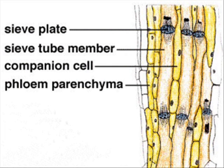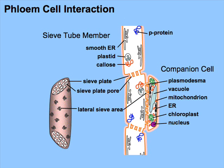The companion cell, with its nucleus, controls the movement of solutes and provides ATP for active transport in the sieve tube. Strands of cytoplasm called plasmodesmata connect the sieve tube element and companion cell. Parenchyma provides support through turgidity, and fibres provide structural support for the sieve tube element.